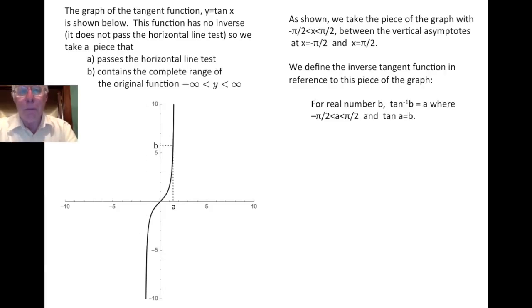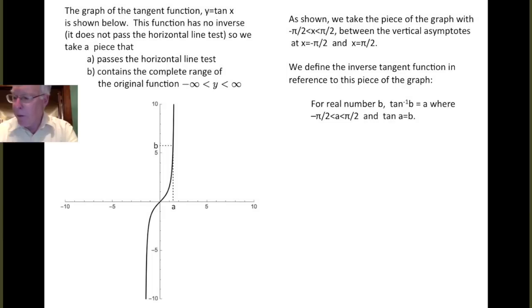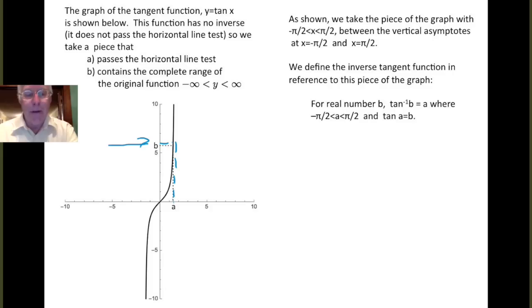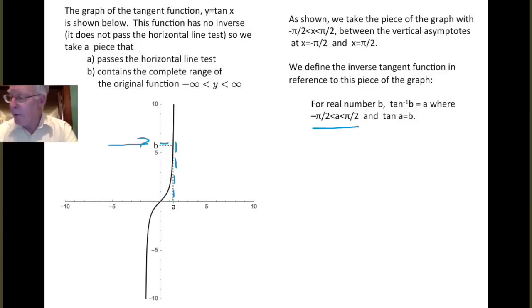So we define the inverse tangent function with regard to this piece of the graph. For a real number b, we want to think about how we can get an output of b for the tangent. We move over to the piece of the graph we're saving, and then down or up to the x-axis. That value is the thing that gives us a tangent value of b. So for real number b, inverse tangent of b is going to be a, where a is between minus pi over 2 and pi over 2, and the tangent of a is equal to b.